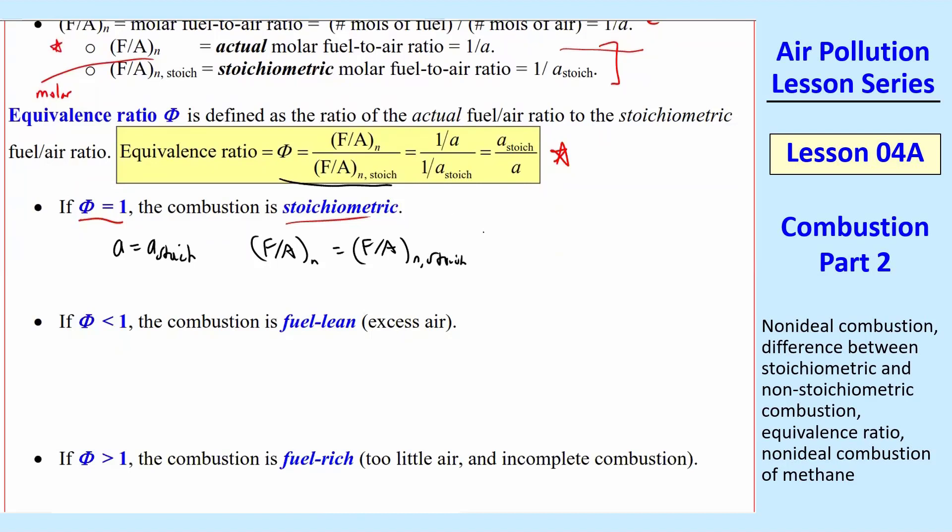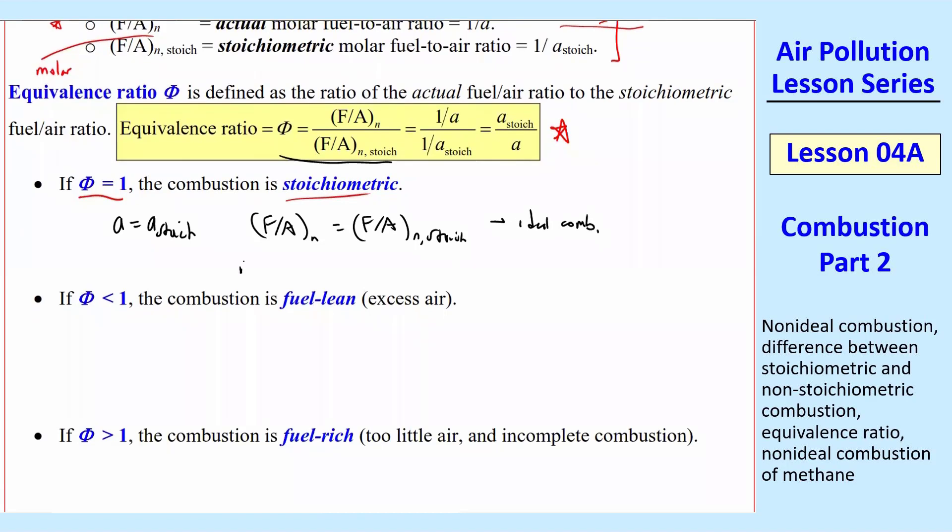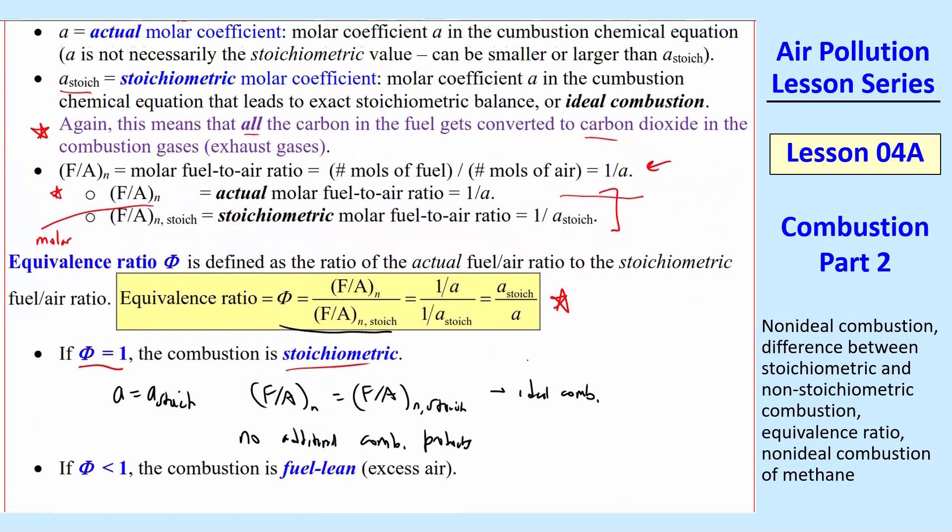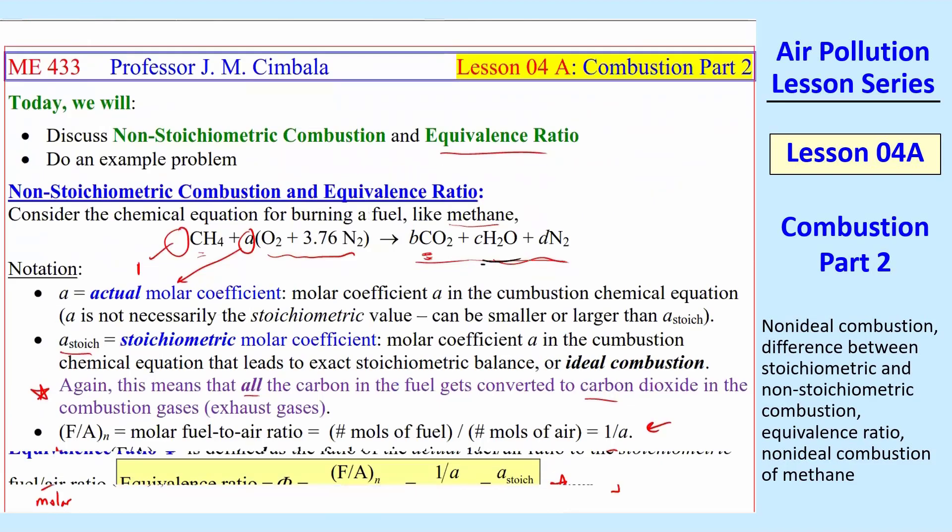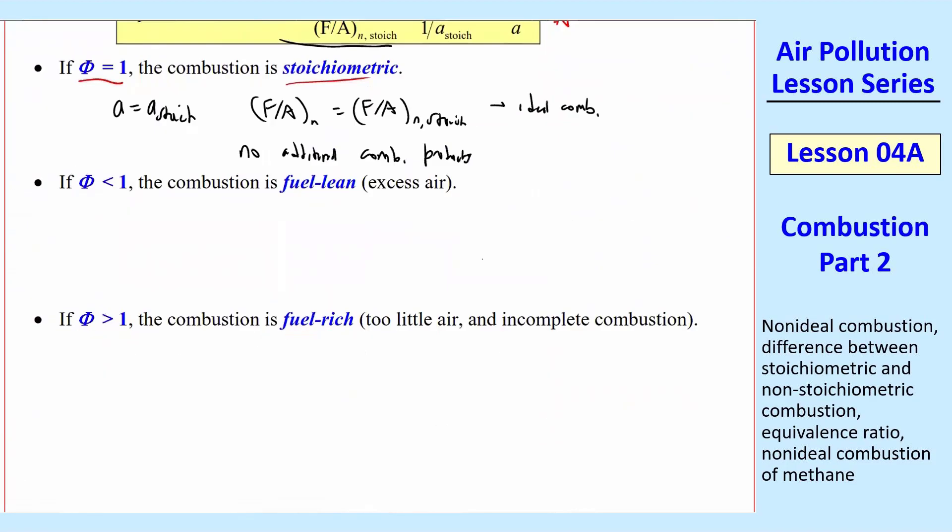And this means that this is ideal combustion. Stoichiometric or ideal. So there's no additional combustion products. Nothing additional besides the ones that I already have up here, namely CO2, water vapor, and the nitrogen goes along for the ride.